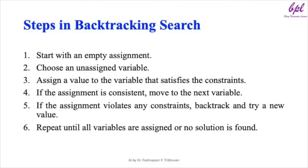These are the core steps of the backtracking search algorithm. You start with no assignments and select one variable at a time. You try different values for this variable and check if the constraints are satisfied. If they are, you move on to the next variable. If not, you backtrack and try a different value for the previous variable. Repeat this process until the puzzle is completely solved or no solution exists.